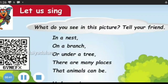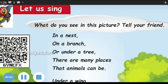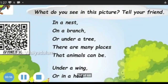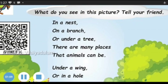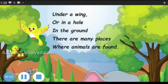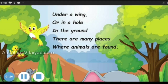Children, before going to the lesson, let us sing a nice song. What do you see in this picture? Let's see one by one. We can see a tree, birds, some animals. Now let's sing: In a nest, on a branch, or under a tree, there are many places that animals can be. Under a wing or in a hole in the ground, there are many places where animals are found.